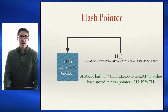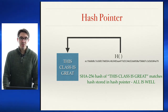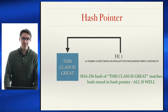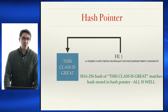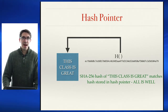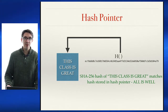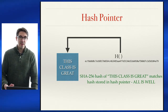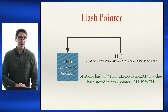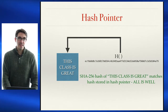Here we can see a graphical representation of a hash pointer to a string. This specific string, in all caps, is 'THIS CLASS IS GREAT,' as I'm sure you'll all agree. The SHA-256 hash of that value is included in the hash pointer, so not only does the pointer point to where this string is located in memory, it also includes the hash ECFBB... If I later look at what is in this piece of memory and the hash of 'THIS CLASS IS GREAT' equals the hash in the hash pointer, I can tell that this data has not been modified since the time I created the hash pointer.